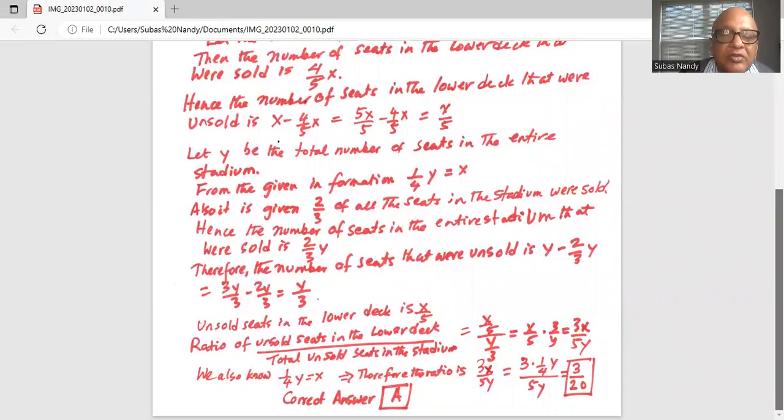That is the ratio of the unsold seats in the lower deck to the total number of unsold seats in the stadium is 3 over 20.